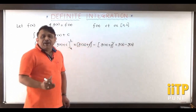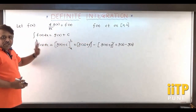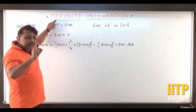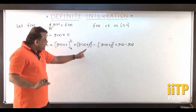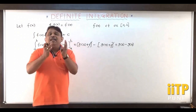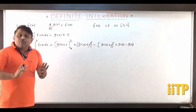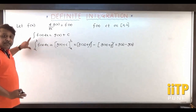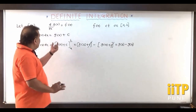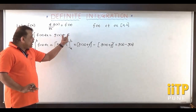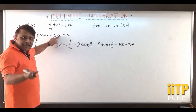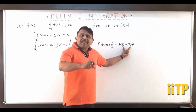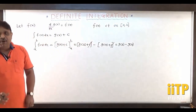Here we see that the constant of integration gets eliminated by cancellation, and we get g of b minus g of a — some fixed numbers. So this difference is defined to be the definite integral from a to b of f of x dx. The name 'definite' has come because the indefiniteness of c is gone — c gets eliminated in this process — and whatever value we get is definite. So we replace x by the upper limit b and lower limit a in g of x, and the difference g of b minus g of a is defined as the definite integral of f of x.